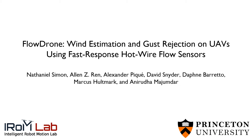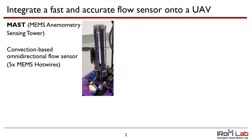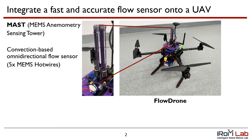This work is titled FlowDrone: Wind Estimation and Gust Rejection on UAVs Using Fast Response Hotwire Flow Sensors. We integrate a fast and accurate flow sensor onto a UAV platform. The sensor is the MAST, or MEMS Anemometry Sensing Tower, a convection-based omnidirectional flow sensor that uses five MEMS hotwire sensing elements to estimate a wind vector in two dimensions. By integrating the MAST onto a quadrotor UAV, we create FlowDrone, an experimental platform for wind-aware control using real-time wind estimates.